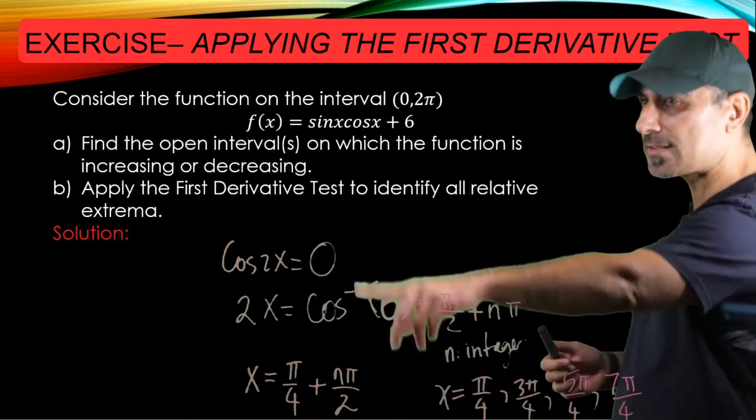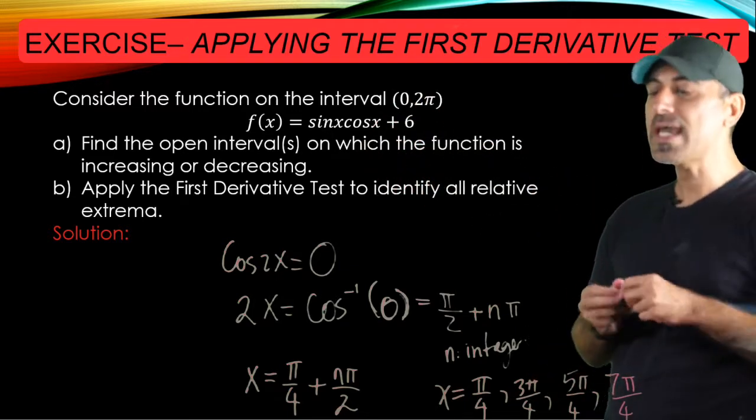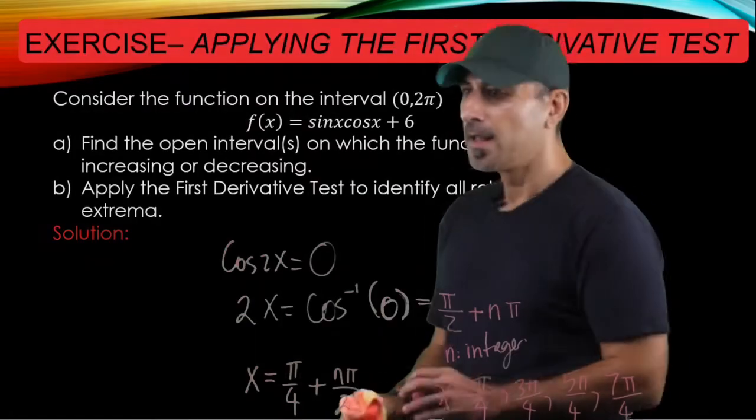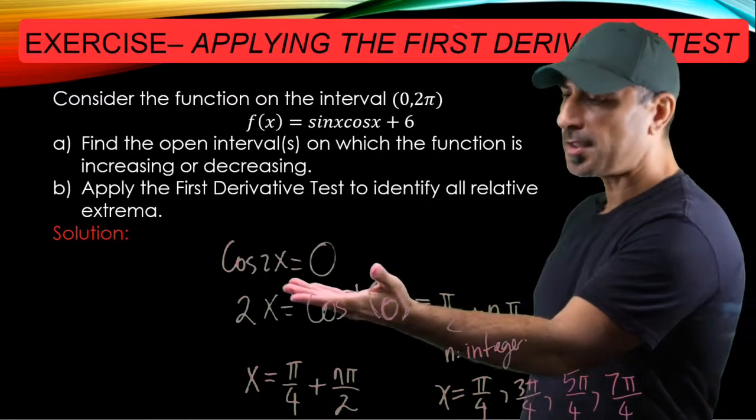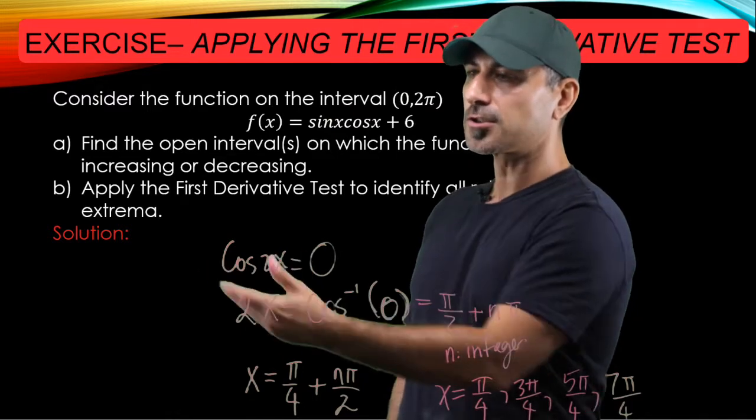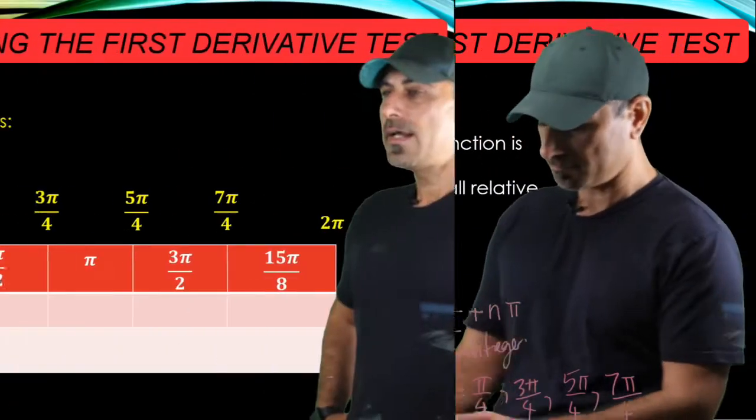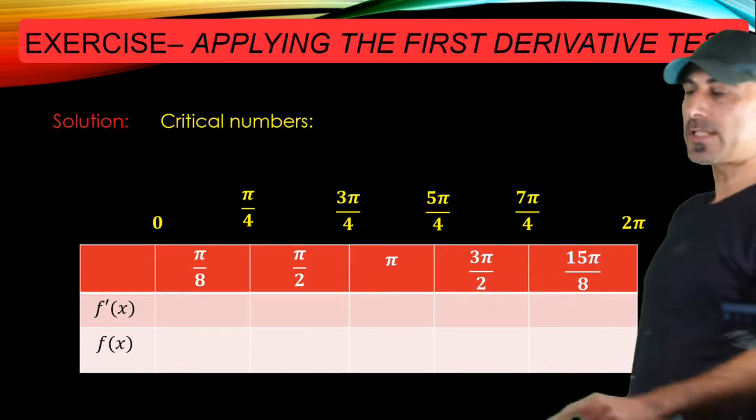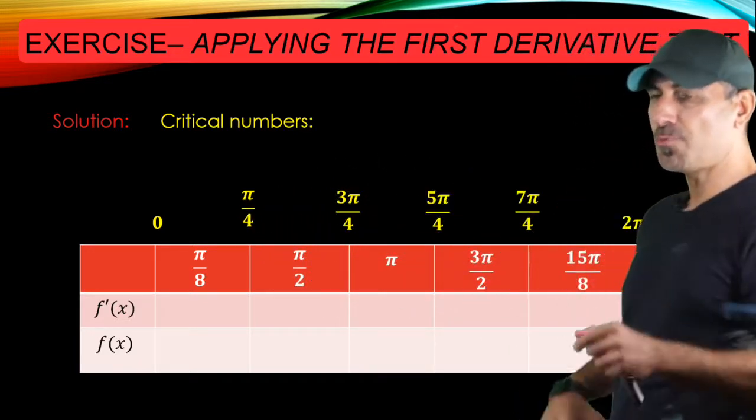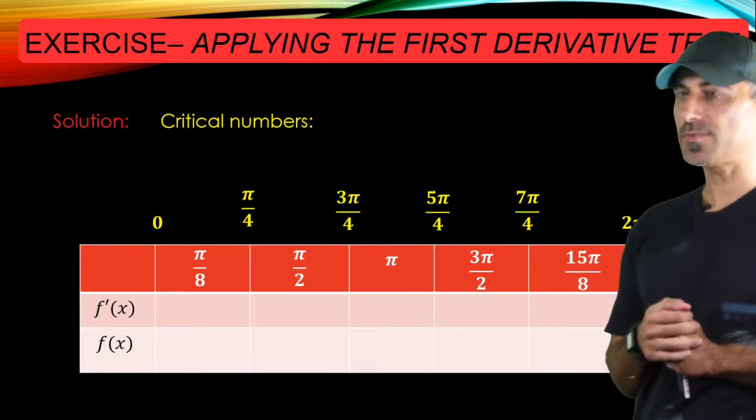So we have 4 critical points. And there's no other critical point because there's no x that makes the derivative of the function to be undefined. And here we go, I have 4 critical numbers from pi over 4 to 7 pi over 4. And 0 and 2 pi are the end points of the interval.